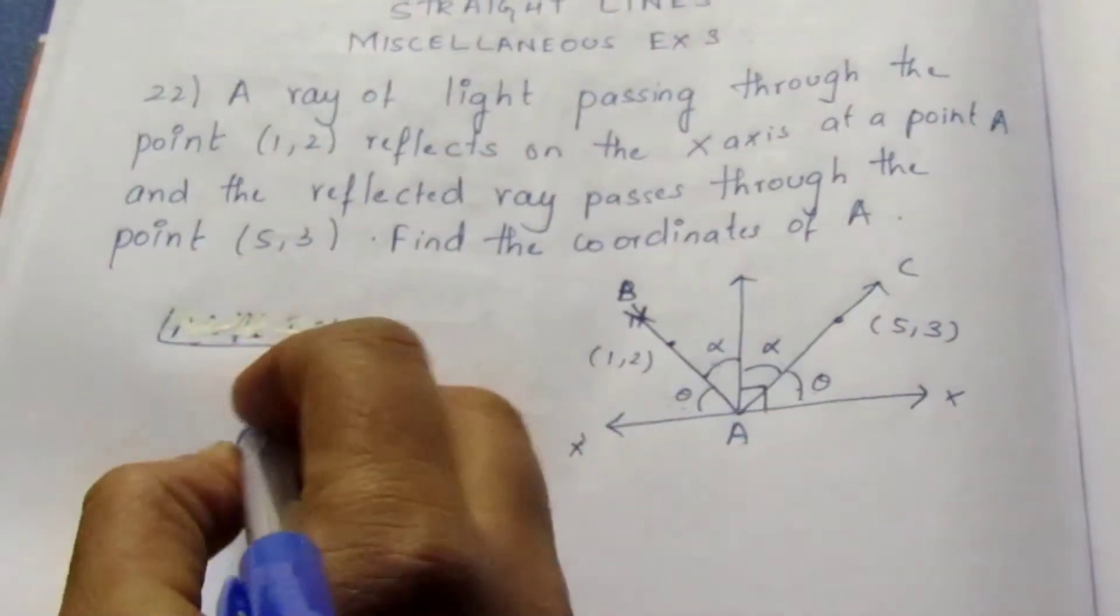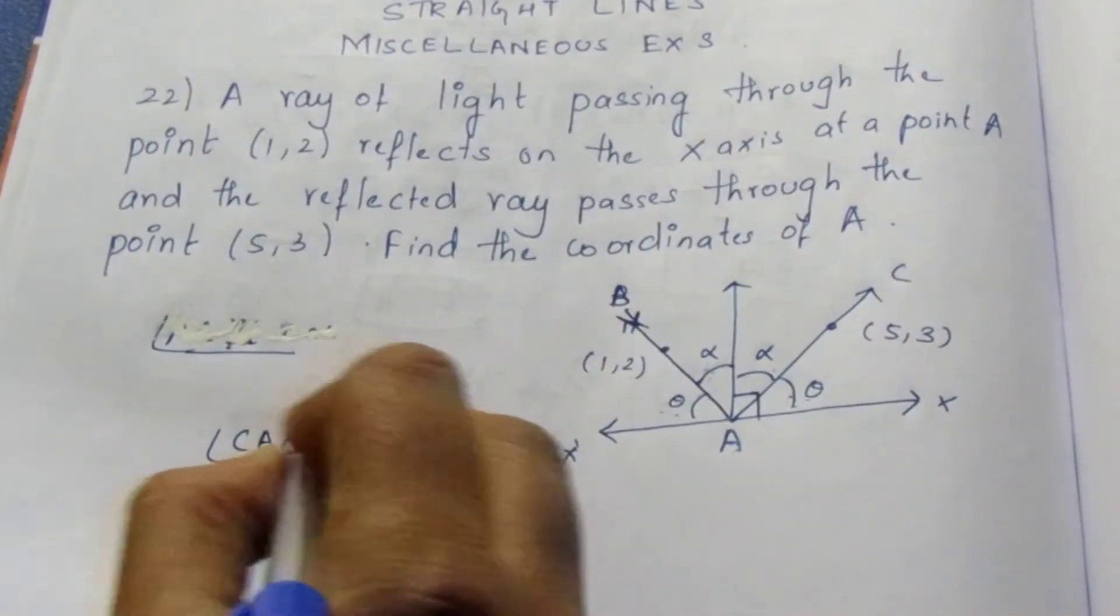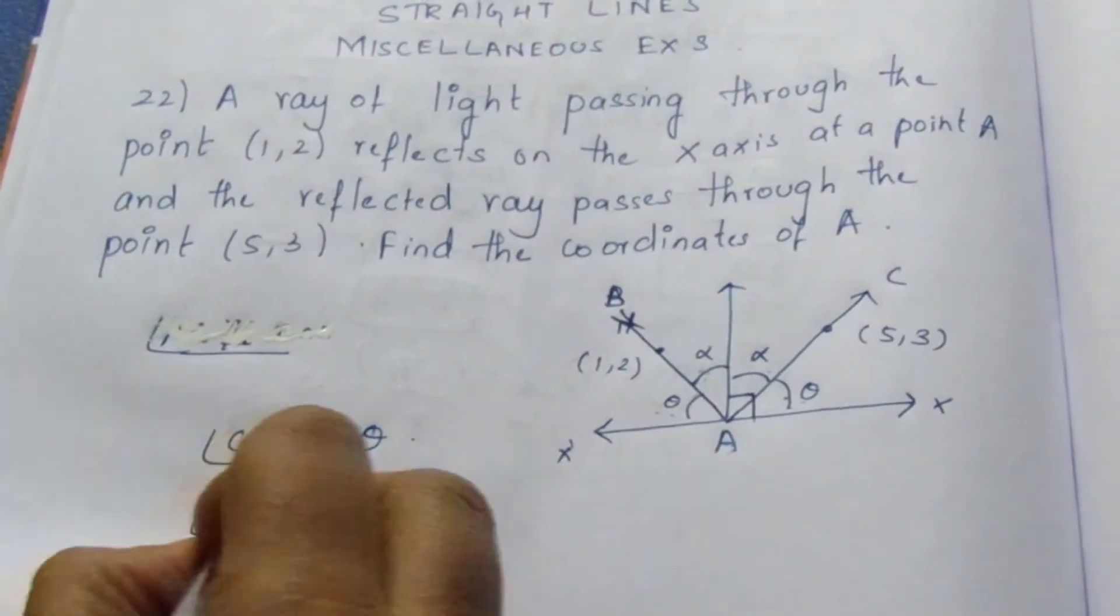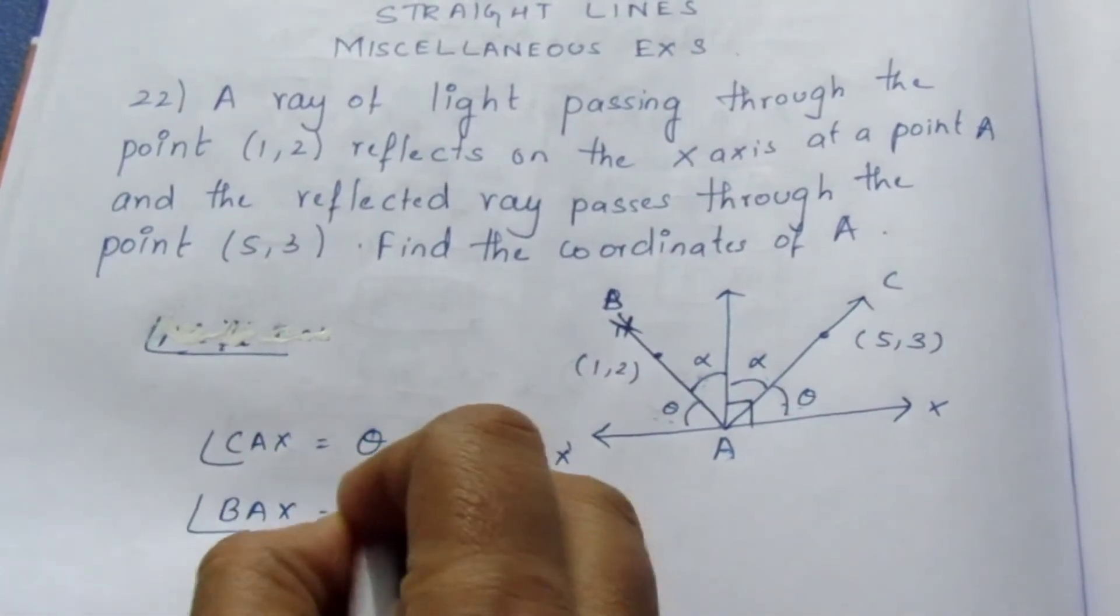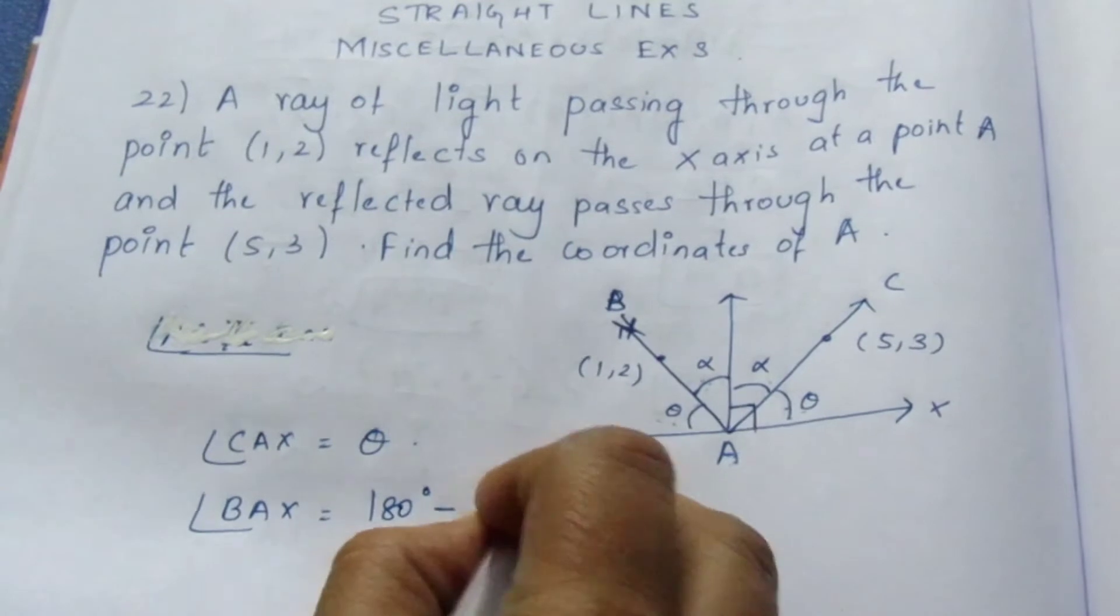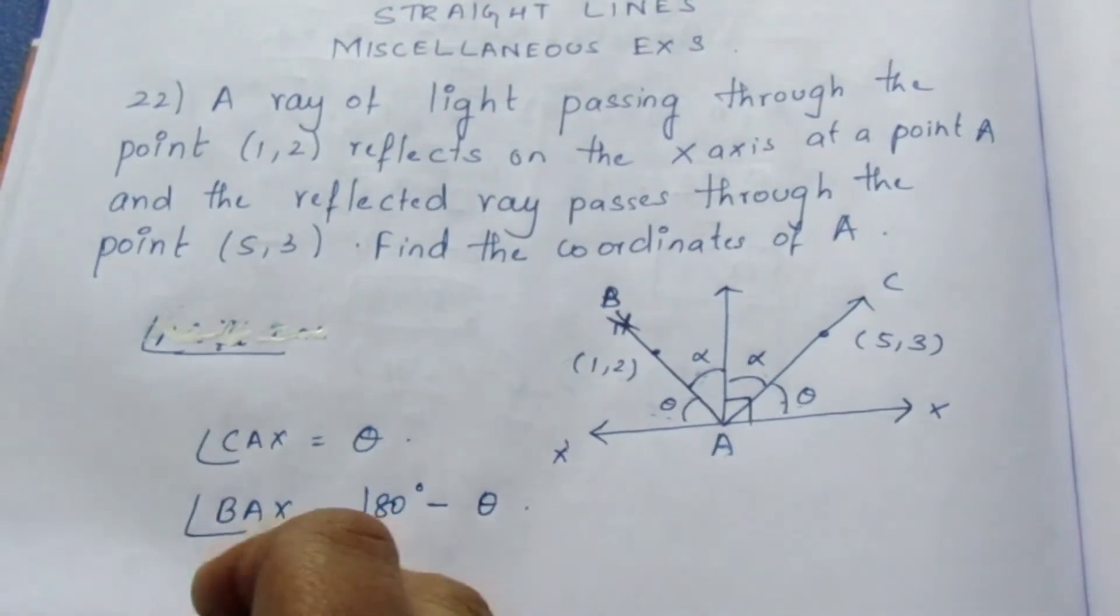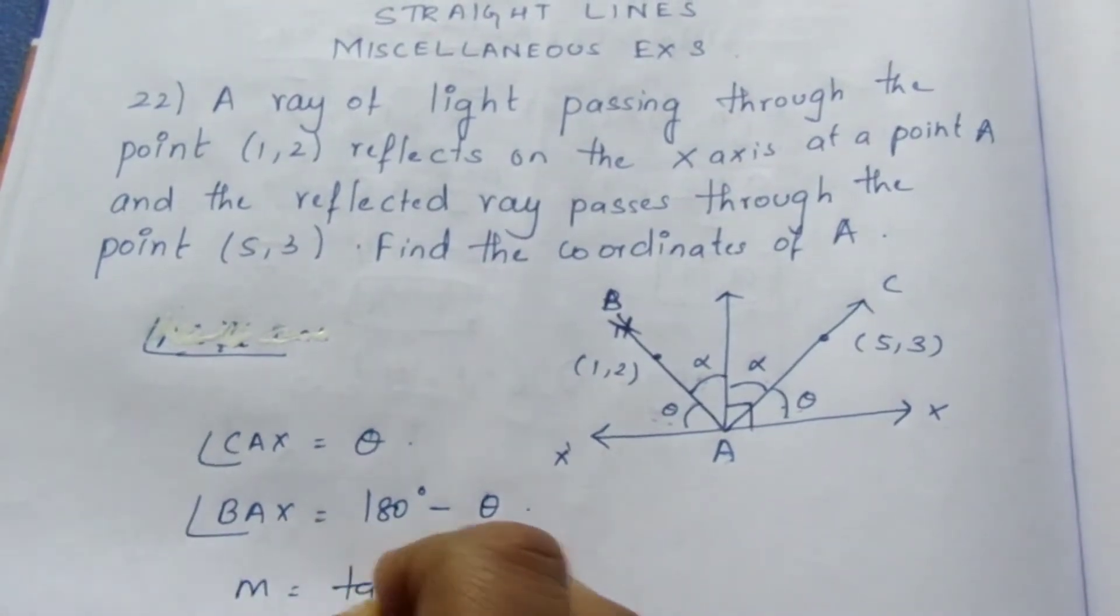Now angle for CAX is theta. Similarly, BAX is 180 minus theta. So we know that m is equal to tan theta.